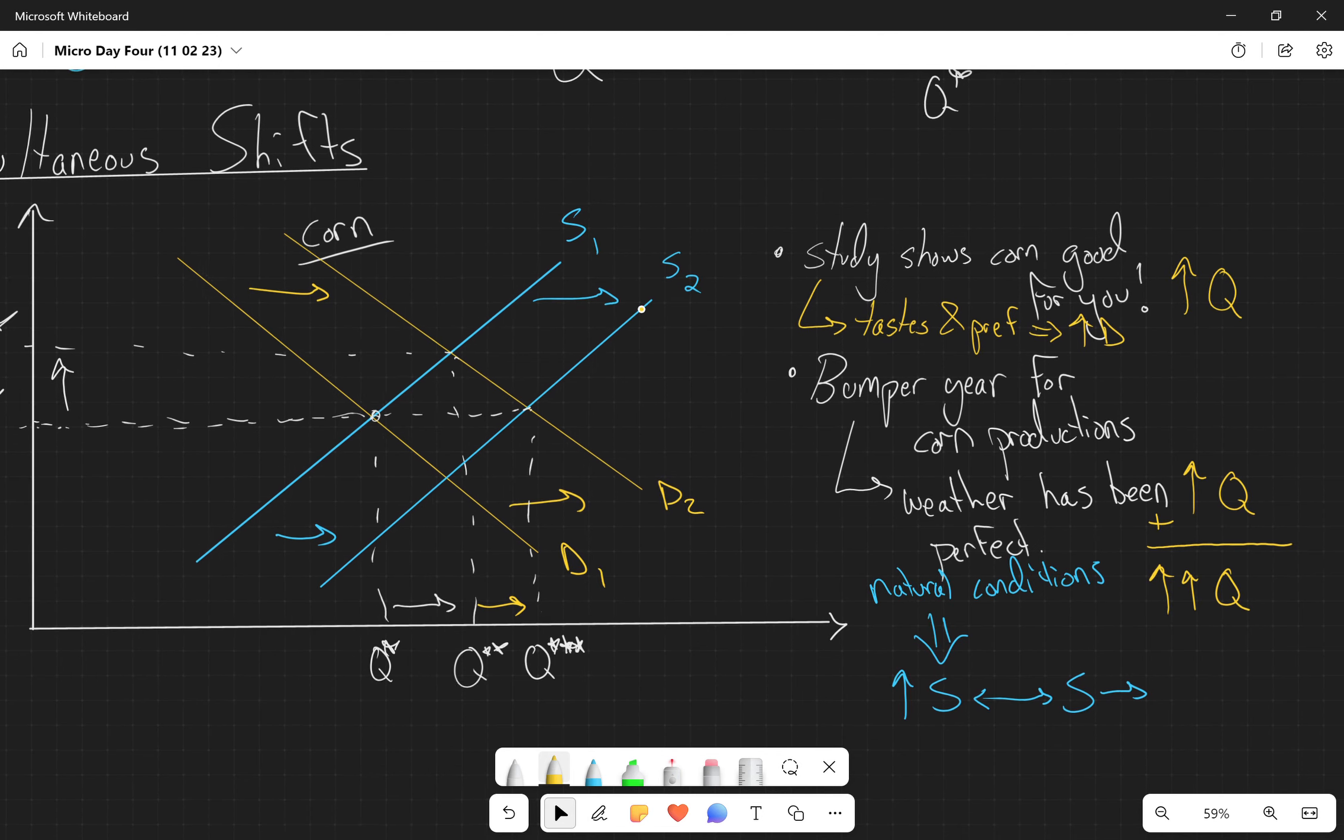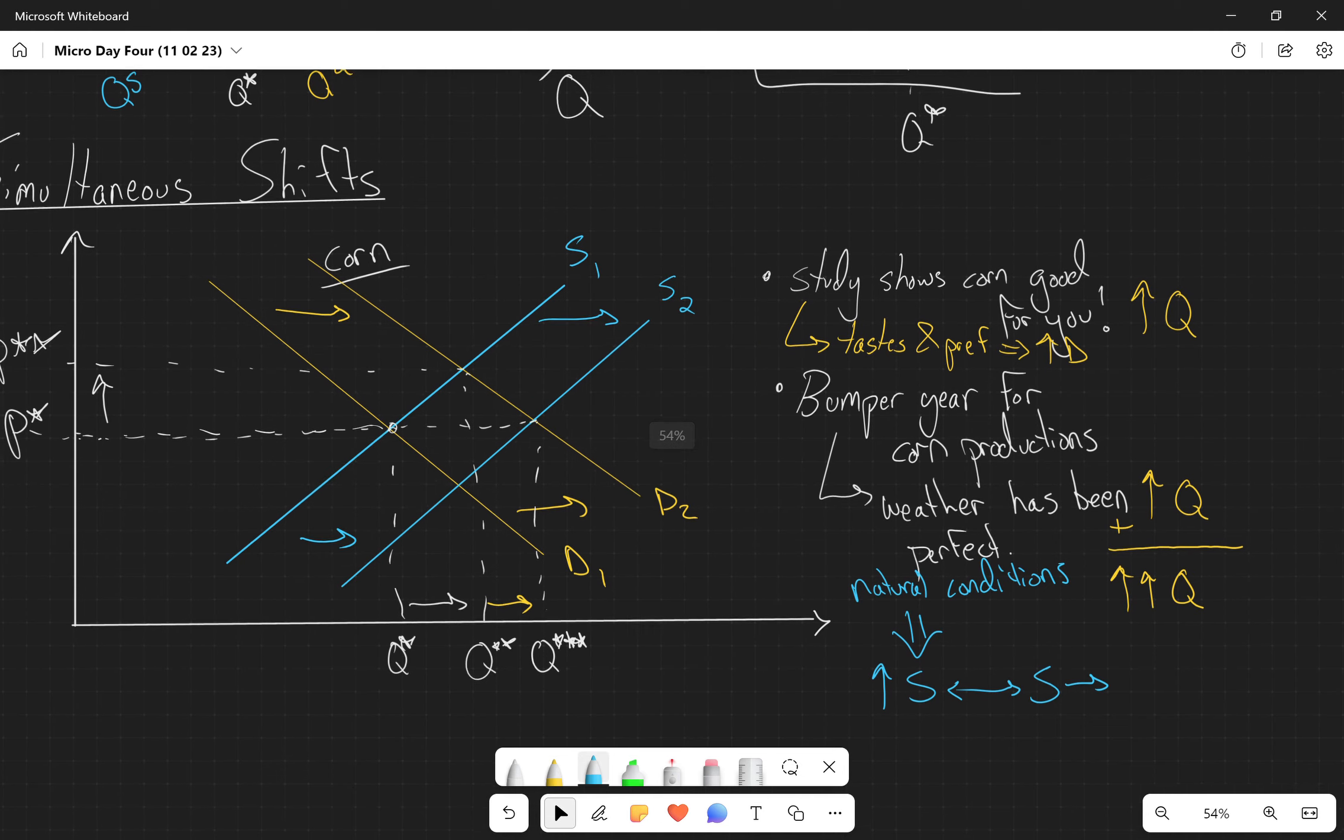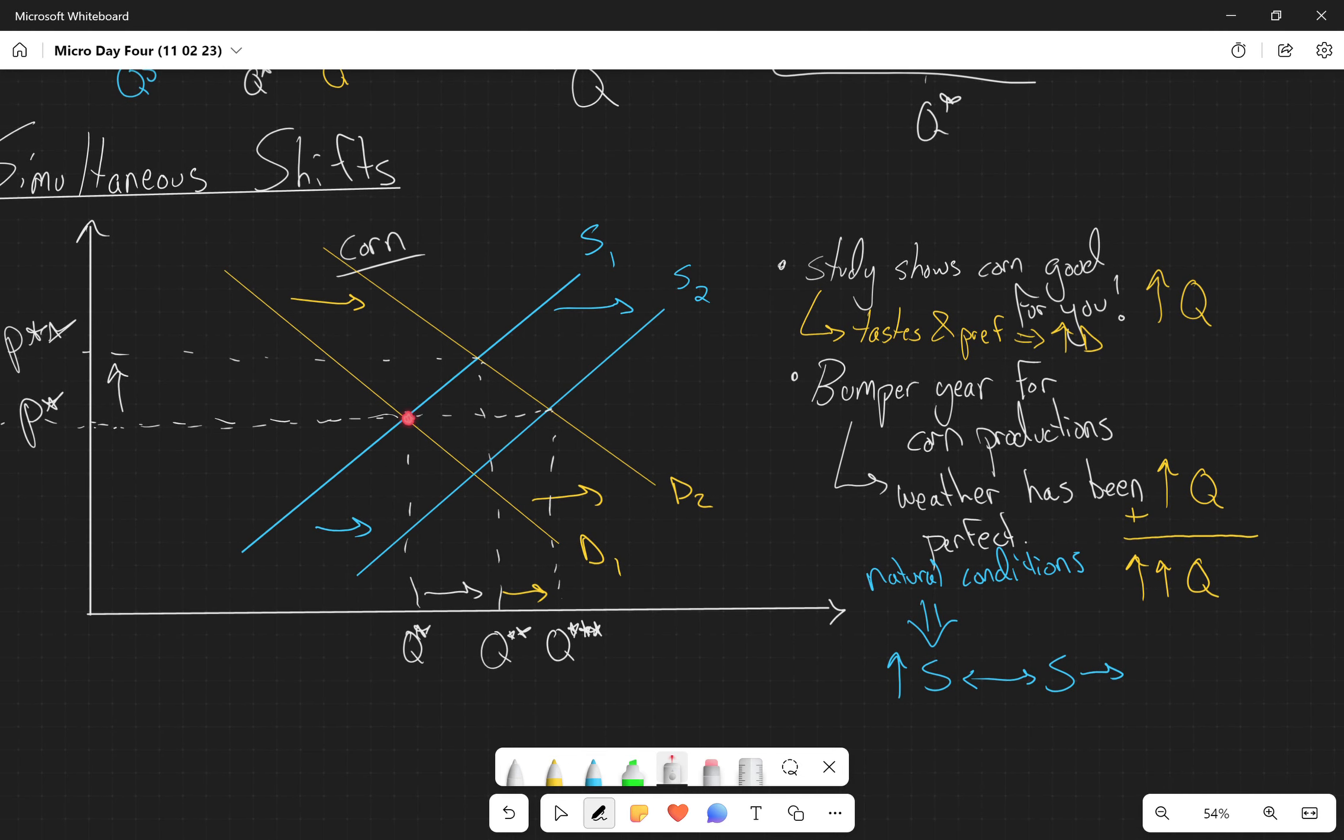Now the tricky part is what's happening with our price. So again, let's walk through. We're at this initial equilibrium, P star. We have the first demand shift to tastes and preferences, that increases our price. We have a second shift, weather has been perfect, that decreases our price. So this one, not so clear. We have an increase in the price and we have a decrease in the price. So when we add these up, we end up with a big old question mark. We have no idea what happens to prices. They could have gone up, they could have gone down, they could have stayed exactly the same.